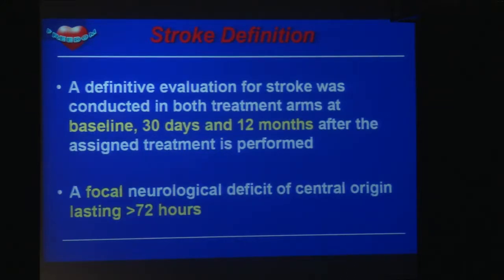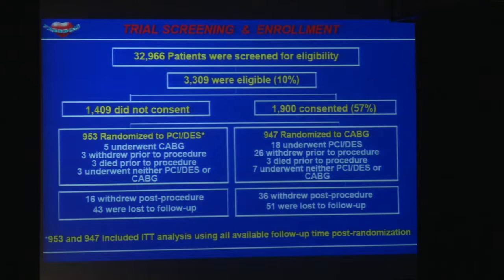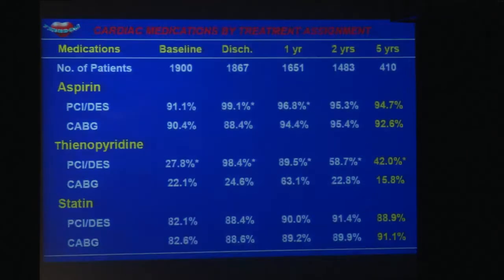Stroke was defined as a neurological deficit of central origin lasting more than 72 hours. In terms of enrollment, over 100,000 patients were screened. Of these, 10% were randomizable, and of those, 60% entered the trial — yielding 1,900 patients. The baseline clinical, hemodynamic, and laboratory characteristics, as well as medications, were identical between both groups.